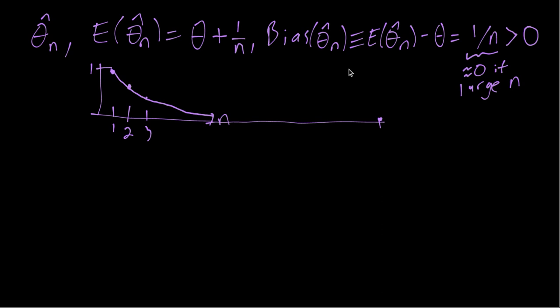As another example, make it a little more complex and different. Imagine an estimator. Here's our first example. Second example, imagine the mean of the sampling distribution of theta hat is 0.5 plus 1 over n, all that times the true theta.